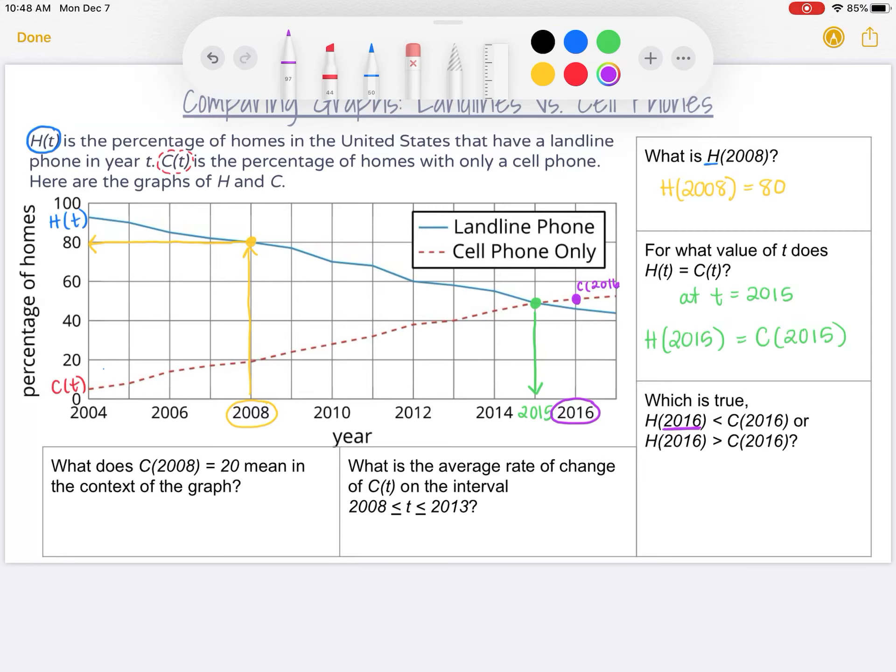So I need to make sure that my inequality symbol needs to point to the lower function and open up towards the higher function. The higher function is C, so I need my inequality symbol to be opening up to C and pointing to H because H is the smaller one. So H(2016) is smaller, so that inequality symbol needs to point to H(2016), and it needs to be opening up to C(2016) because that's the bigger number. Another way, I think sometimes people describe the inequality symbol as like an alligator, and it wants to eat the bigger thing. So that's why it's opening up towards the bigger value.